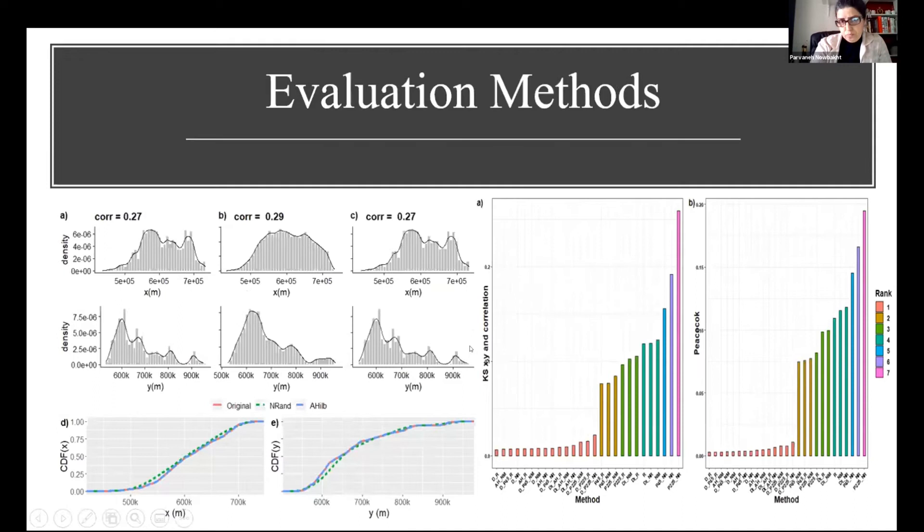To evaluate these obfuscation methods, several evaluation methods were used. One is distribution preservation. I use two-dimensional case statistic test, which is a test for comparing point distribution. I use Peacock package in RStudio, which I found very slow, so I did it another way. I use one-dimensional case test for both coordinates and then find the correlation alteration between these two coordinates. And then rank the models based on these two metrics. You can see both give us the same result. Density method has the best distribution preservation and N-Rand has the worst one.